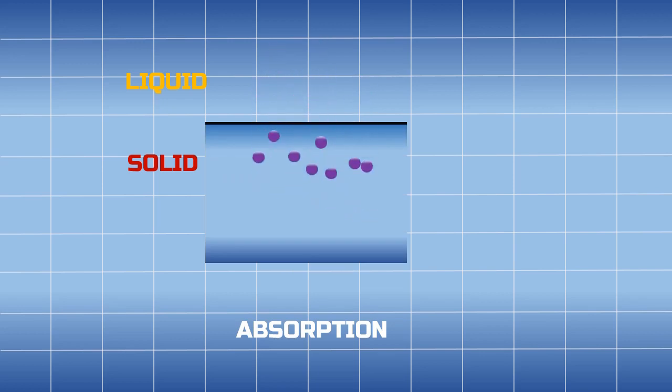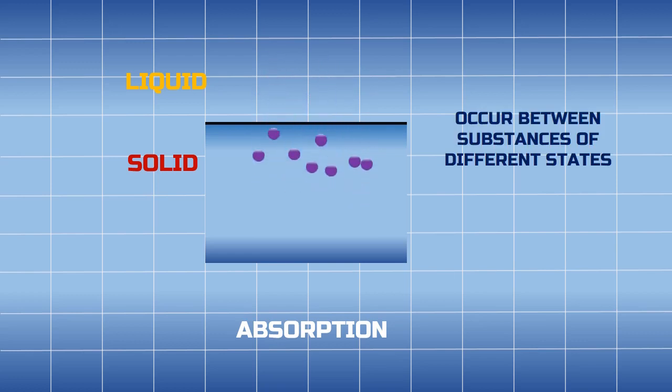The key point here is that both substances should be in different states, like liquid absorbed by solid, or gas absorbed in liquid. Second point is that it's a volume phenomena, meaning the liquid is entering the volume of solid instead of just staying on the surface. It is entering the bulk phase of the solid or gas entering the bulk phase of the liquid.